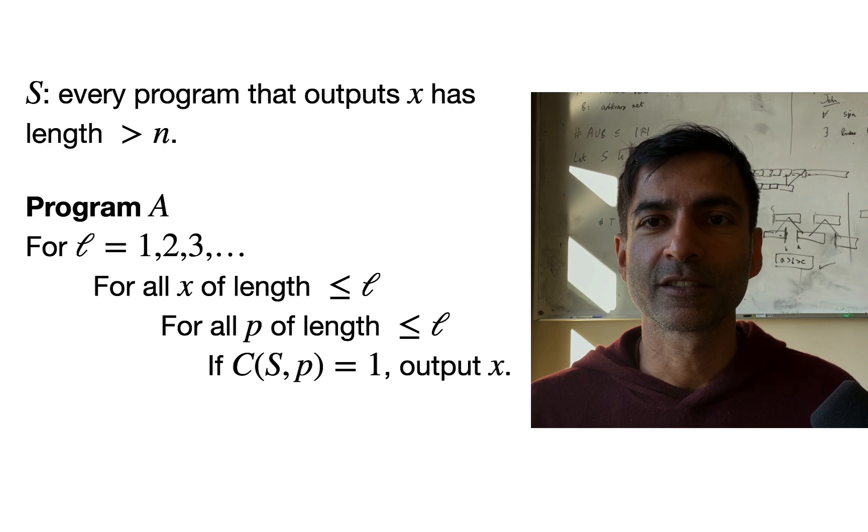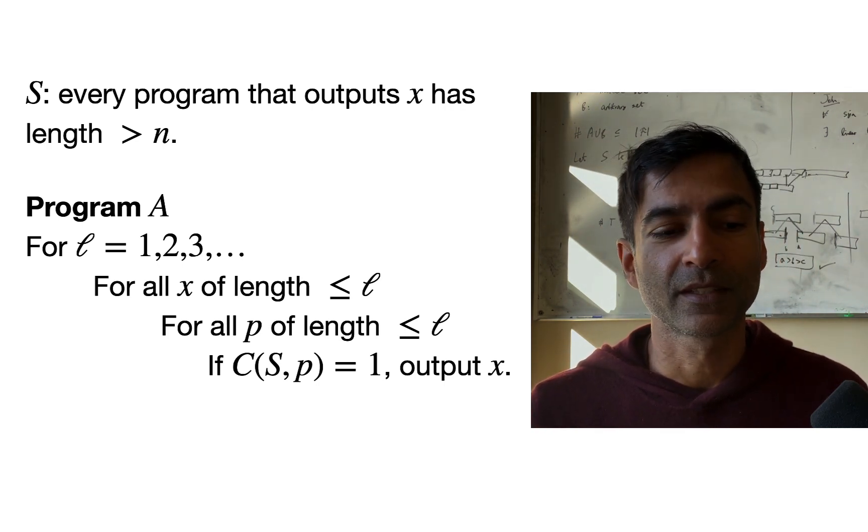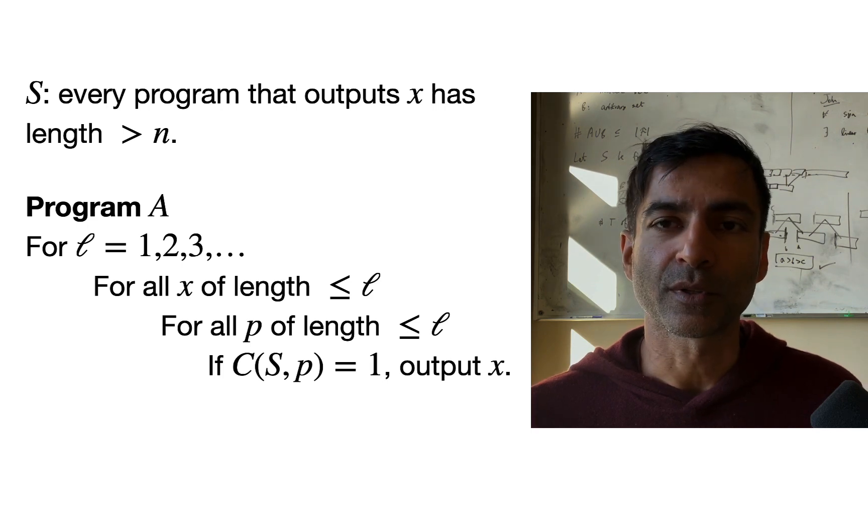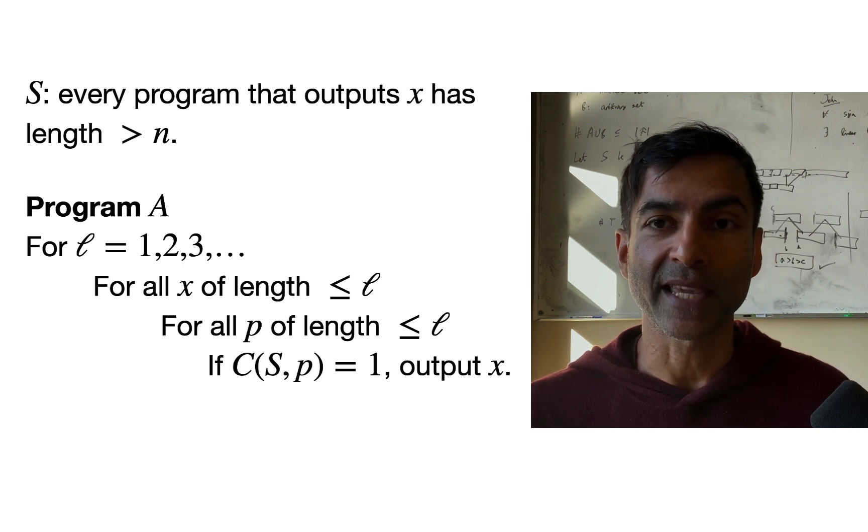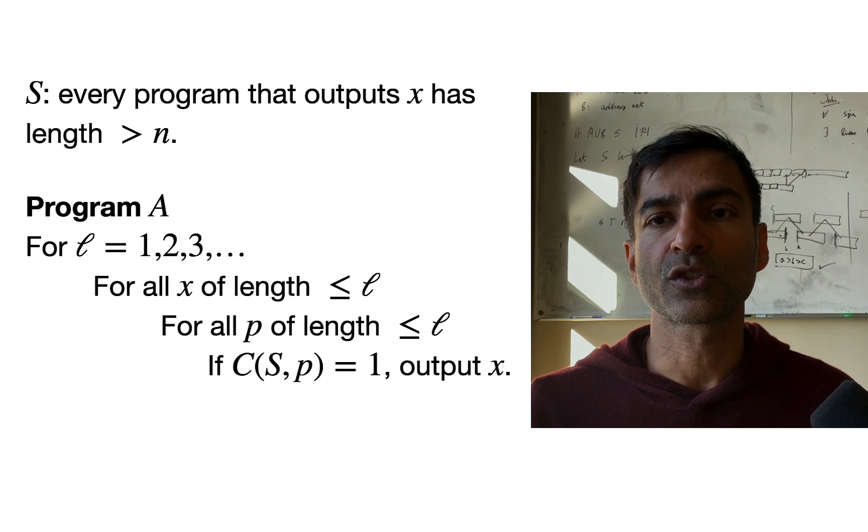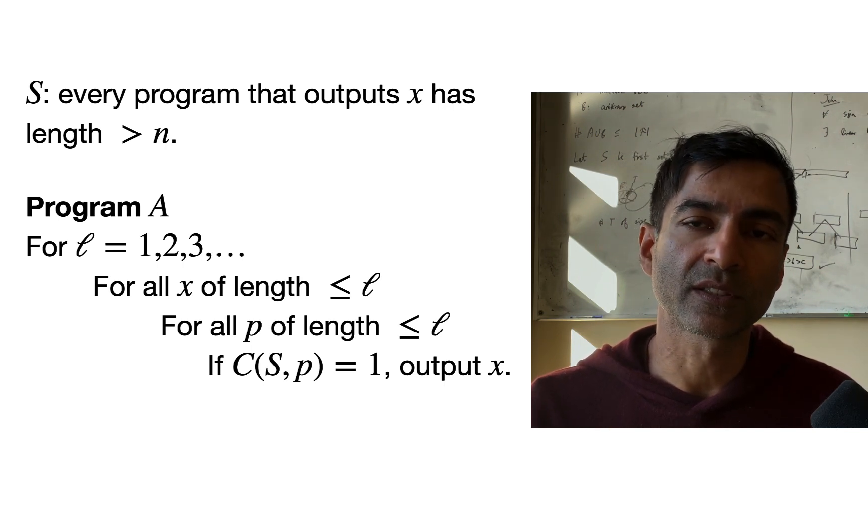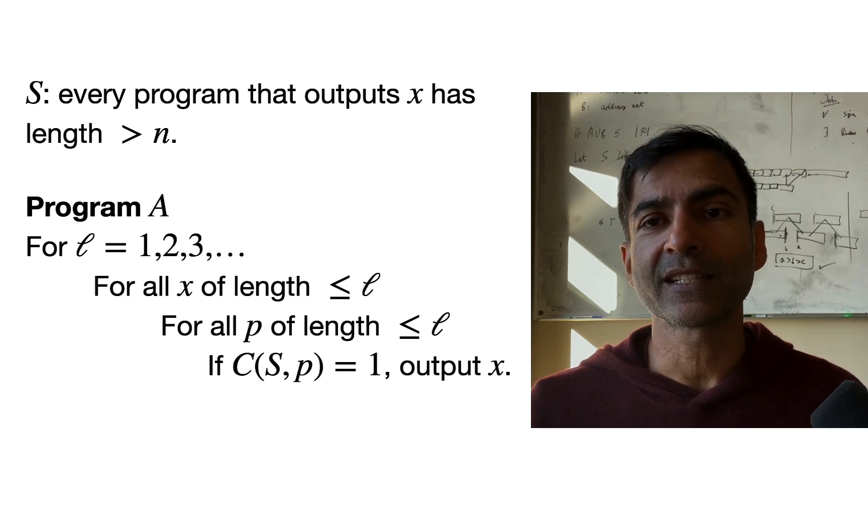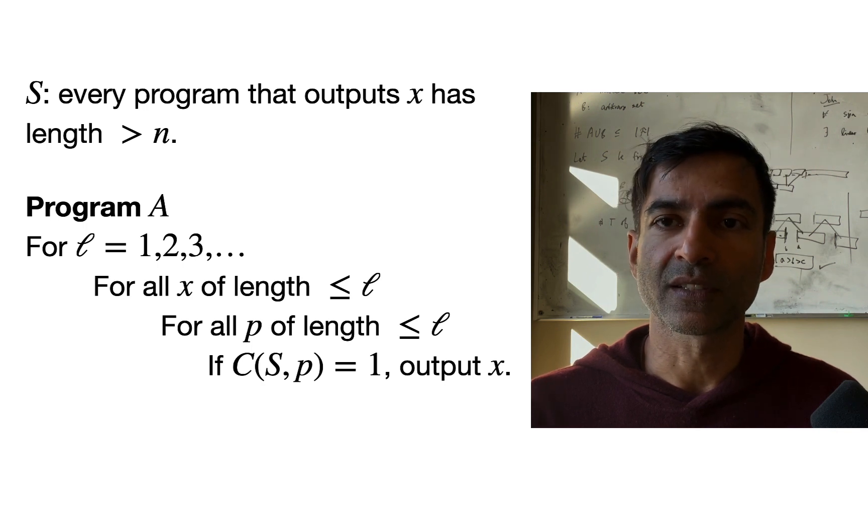So now let's turn to proving Gödel's theorem. The proof is based on a simple program. So let's say n is a fixed parameter. Then the fixed value n determines this program A. What the program does is it first runs over all choices for ℓ. So it sets ℓ equals 1, ℓ equals 2, ℓ equals 3, and so on. And for each ℓ, it runs over all possible strings x of length at most ℓ and all possible proofs p of length at most ℓ.